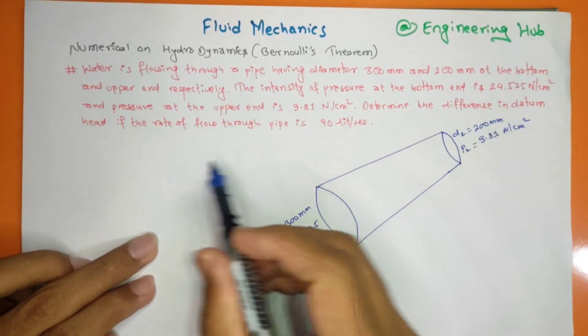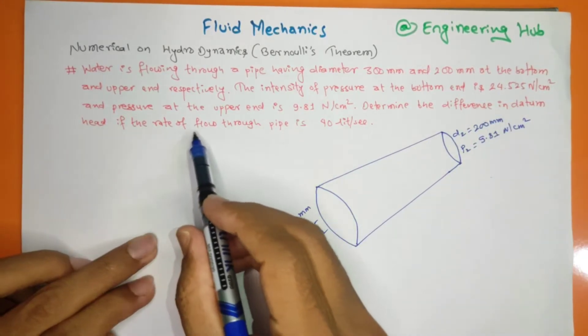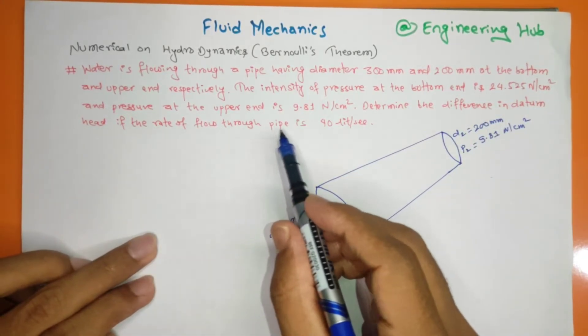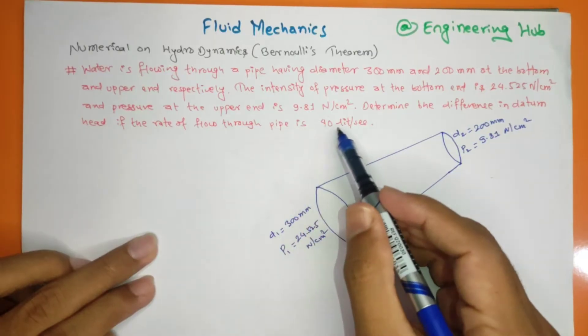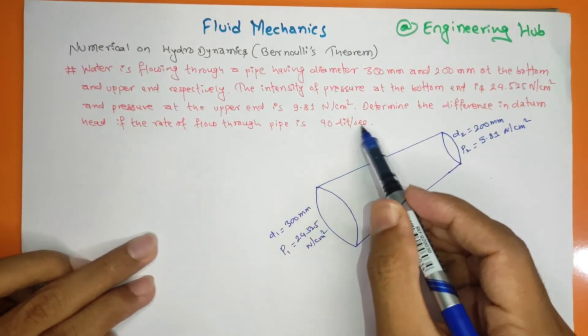We need to find the difference in datum head if the rate of flow through the pipe is 40 L per second.